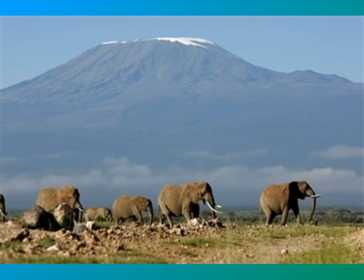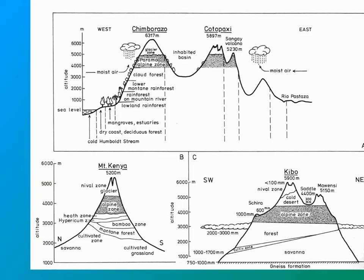Here are some high steppes in Asia with elephants on the plains below the barren rock, which has very few species living there. And here are some very high elevation places in different parts of the world.